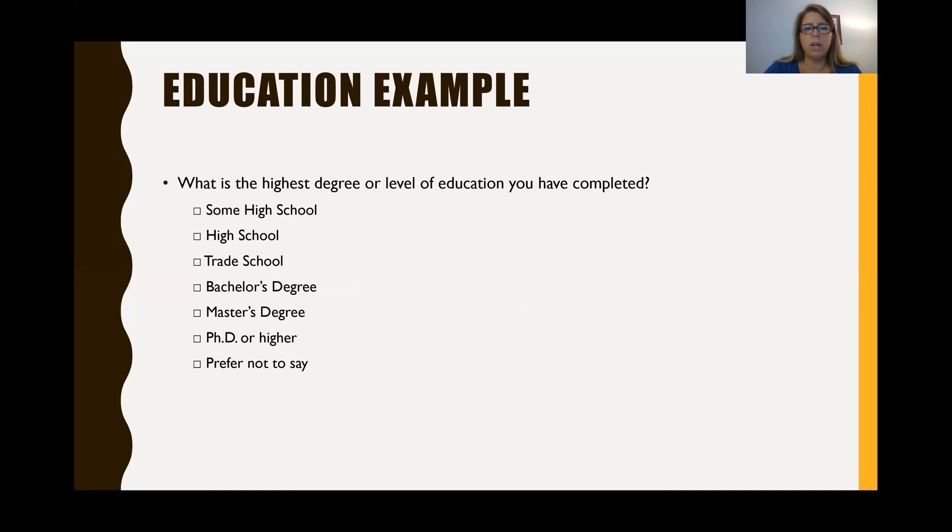Some high school, high school, trade school, bachelor's degree, master's degree, PhD, or higher, or prefer not to say. And so high school is higher or more education than some high school. Bachelor's degree is more than trade school or high school, or even some high school. Master's degree is one level above a bachelor's degree. A PhD or higher is a master's degree. So PhD, MD, those are all ordinal. So there's a hierarchy involved there.